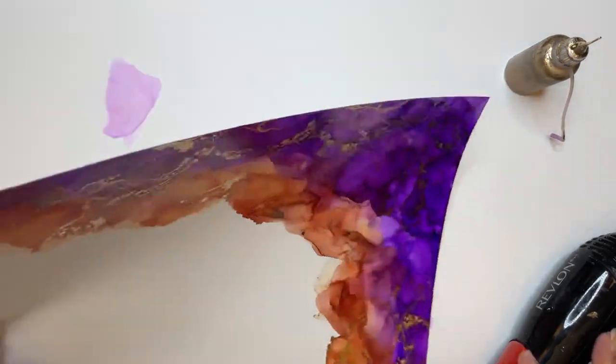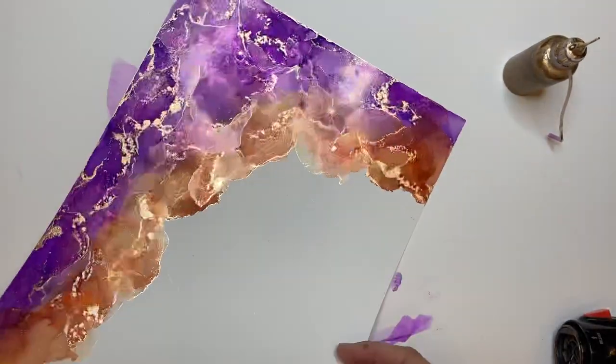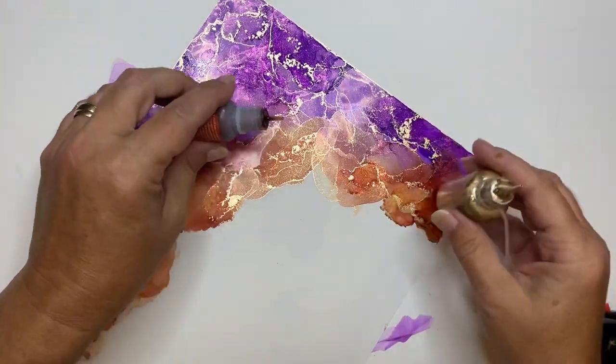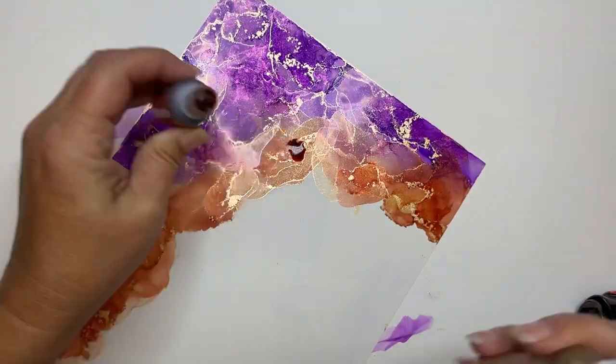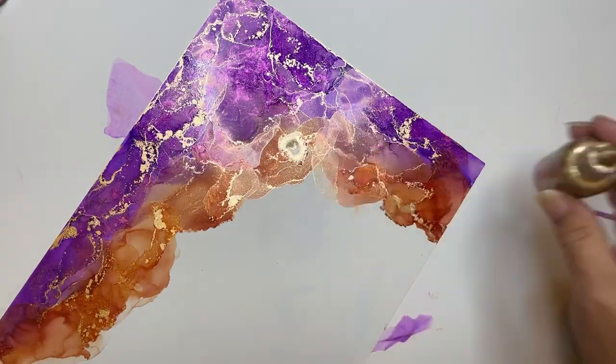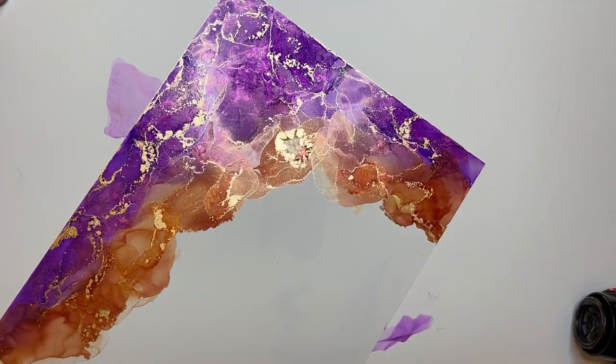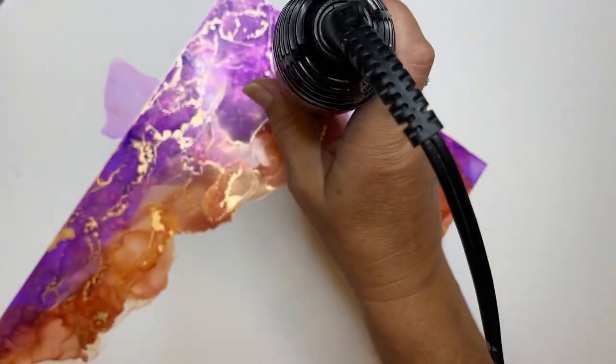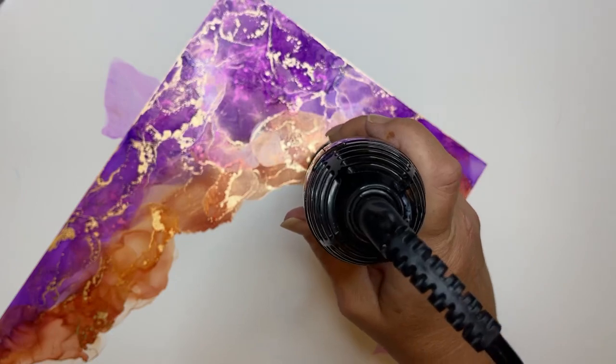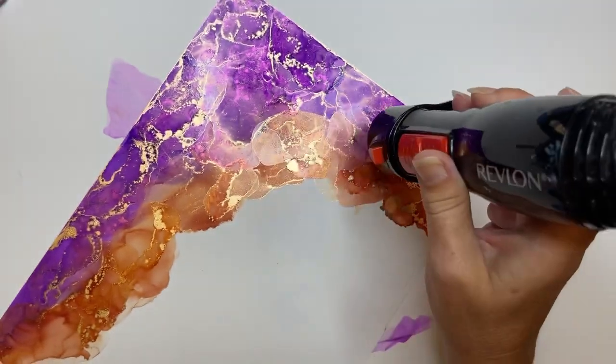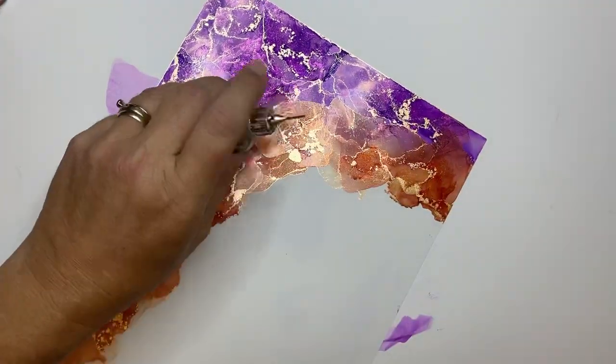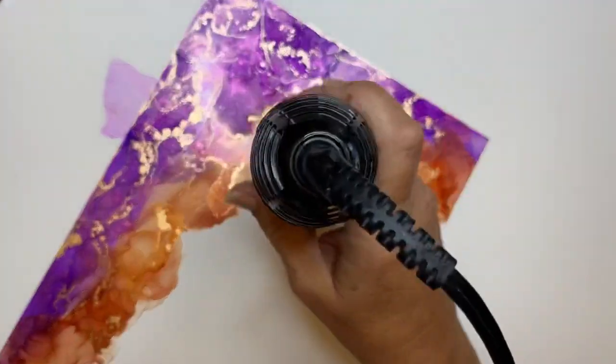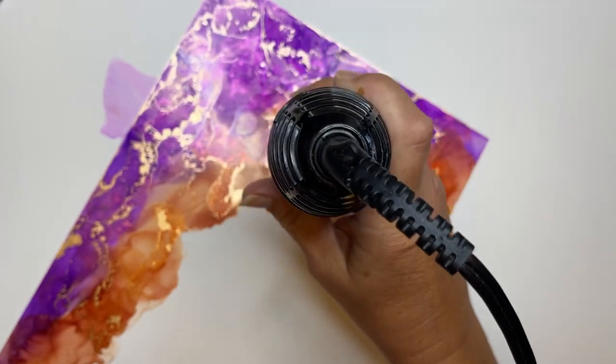I lean it some to help steer the inks, but if you hold it up high you're going to splatter ink and alcohol everywhere. Also, do not put it directly over top of your puddle, your ink and alcohol puddle, unless you just want it to go everywhere. I always try to keep it to the side a little bit and that will help keep your ink moving in one direction.